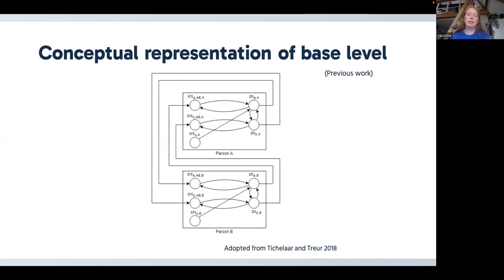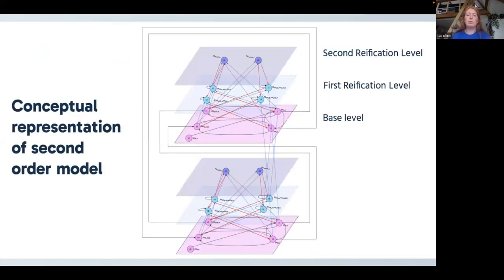And in this work, we took this model and added two extra levels. A first reification level and a second reification level. The first reification level contains W states, which reflects that our links in our base level, which we can see in pink, so those links—bonding links and Hebbian learning links—are not adapting in a static manner, but in a dynamic manner. So their adjustments could increase or decrease over time. And our second reification level describes the speed at which this happens.